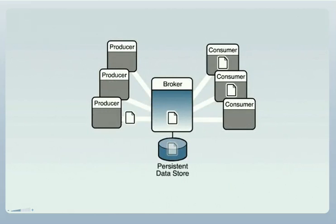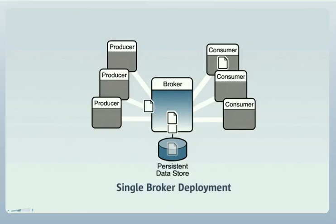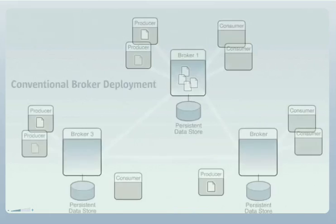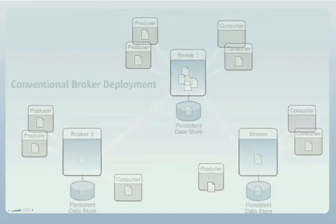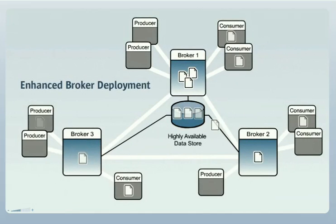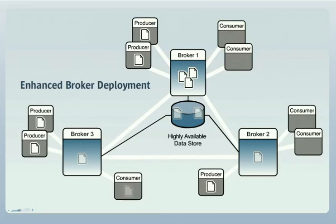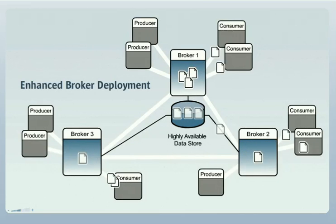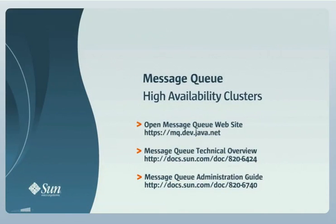As we have seen, Message Queue can support a variety of deployment types, from very simple single broker installations, to high performance and scalable clusters, and finally, to enhanced clusters with built-in failure detection and recovery. This range of support allows you to tailor your installation to meet your application requirements in a flexible and cost-effective fashion. This ends our presentation on Message Queue high availability clusters. For more information on Message Queue and broker clusters, you can check out the OpenMessageQ website at the URL shown. You can also consult the Message Queue technical overview and the Message Queue administration guide for further details. Best of luck and thank you for your attention.